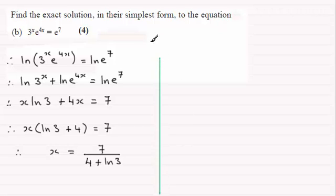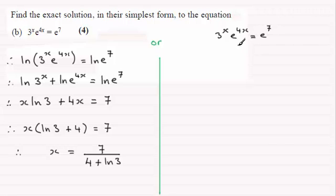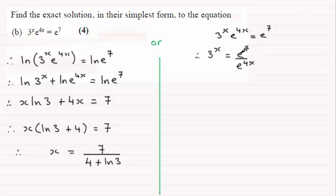Another way: we take our equation from the top — 3 to the power x times e to the power 4x equals e to the power 7 — and divide both sides by e to the power 4x. You end up with 3 to the power x equals e to the power 7 divided by e to the power 4x. Because these are to the same base e, we can subtract the powers, giving 3 to the power x equals e to the power 7 minus 4x.